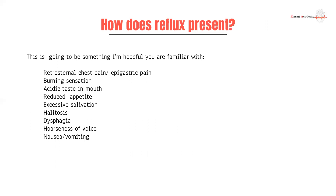GORD can present with retrosternal chest pain, a burning sensation, acidic taste in the mouth, reduced appetite, and excessive salivation. Why do you have excessive salivation with GORD? Right before you throw up, you feel as if you're salivating quite a bit — this is your body's natural defense mechanism against excessive acidic injury. When your body senses you're about to reflux, it increases saliva secretion to protect your mouth and upper esophagus from being damaged by that acidic secretion.